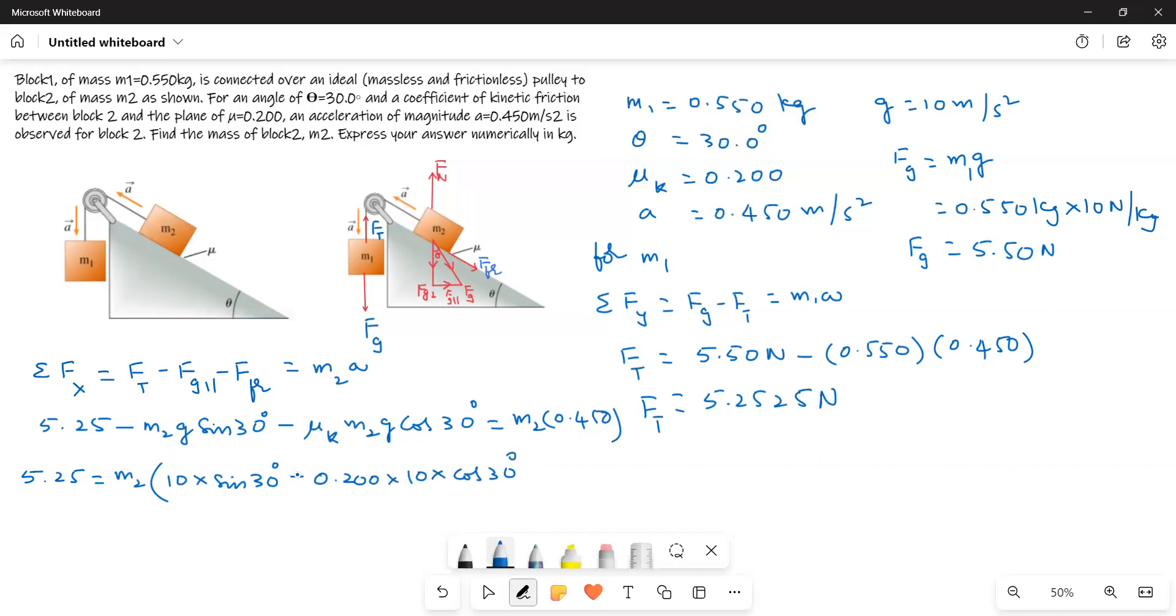This goes that side means this will become positive. And then this one is plus 0.450 M2.